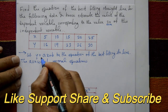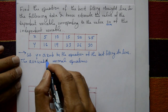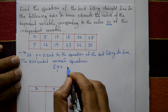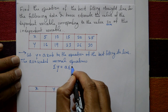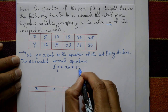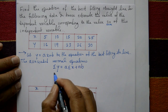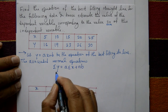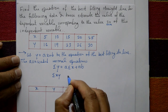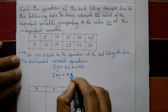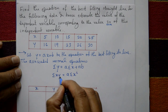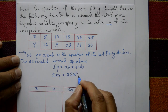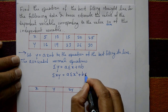The associated normal equations are derived by taking summation on both sides of y = ax + b. This gives: summation y = a·summation x + n·b. Multiplying by x and taking summation again gives: summation xy = a·summation x² + b·summation x.